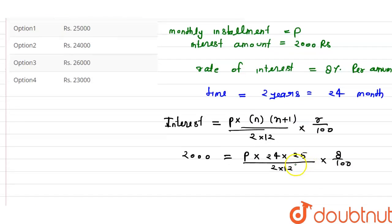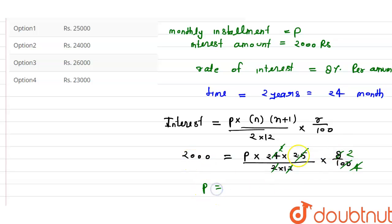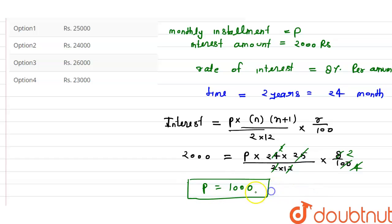Solving the equation: the 2 cancels with 2, giving 24; and 4 into 100 divides with 4 into 8, simplifying further. So P equals 2000 divided by 2, which gives P equals 1000. Therefore, the monthly installment is 1000 rupees.